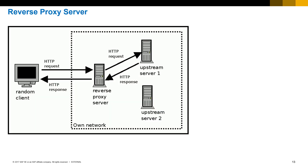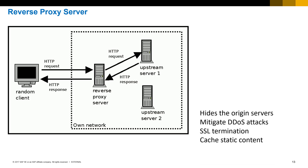Now let's look at the reverse proxy server. The reverse proxy server acts on behalf of the server — it's kind of the other way around. It sits in front of the backend servers and handles client requests by forwarding them to the appropriate servers. Advantages include hiding the origin of backend servers, mitigating denial-of-service attacks, performing SSL termination to offload load on backend servers, and caching.